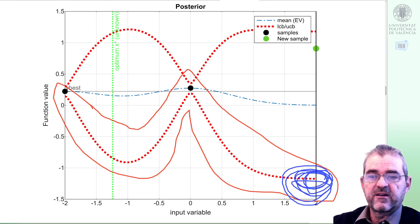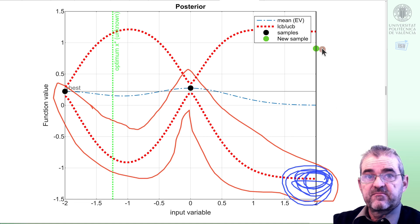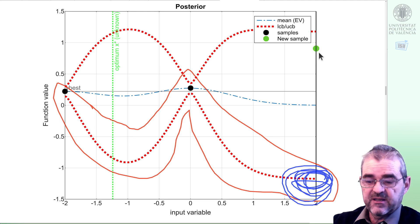So if we are lucky, maybe the minimum is on here. Well, we propose doing that experiment, let's say. And well, no, we were not lucky in the sense that uncertainty was very wide and the function was actually well above the mean.